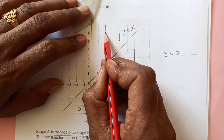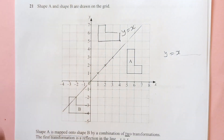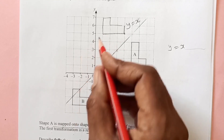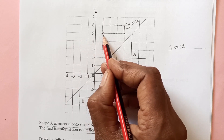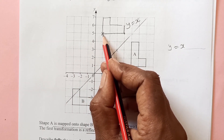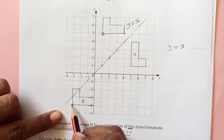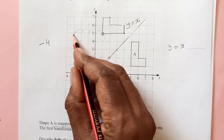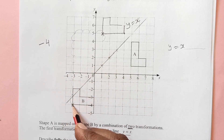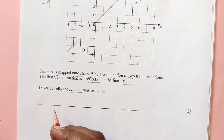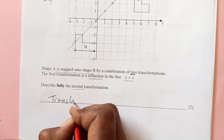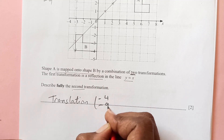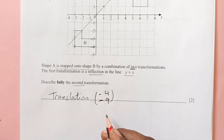So after the first transformation, the second one we need to find is how the shape reached here. We choose one corner: how many units left — one, two, three, four — so four units left, that means minus four. Then one, two, three, four, five, six, seven, eight, nine units down, so minus nine. So this is a translation of negative four and negative nine. Always write the x movement above and the y movement below.